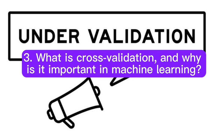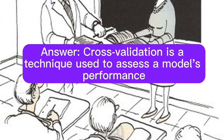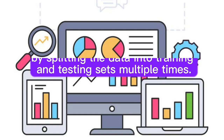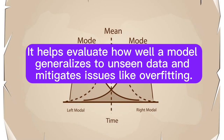Question 3: What is cross-validation, and why is it important in machine learning? Answer: Cross-validation is a technique used to assess a model's performance. By splitting the data into training and testing sets multiple times, it helps evaluate how well a model generalizes to unseen data and mitigates issues like overfitting.